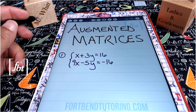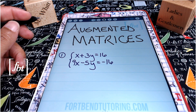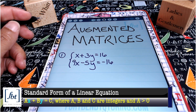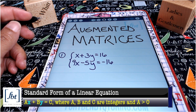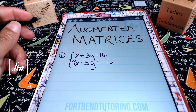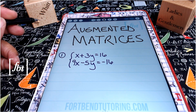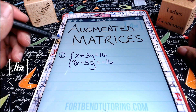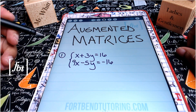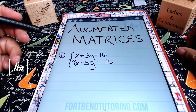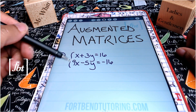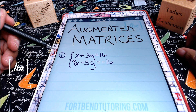The standard form of a linear equation is ax plus by equals c, where a is a positive number and the coefficients a, b, and c are integers. So no fractions or decimals when writing standard form of a linear equation. And that's exactly what we have here in example one: x plus 3y equals 16, as well as 9x minus 5y equals negative 16. These two linear equations are in standard form.